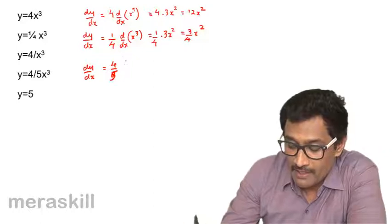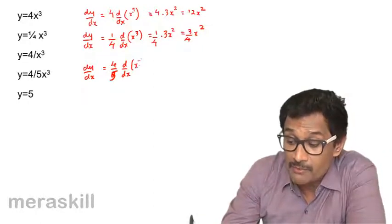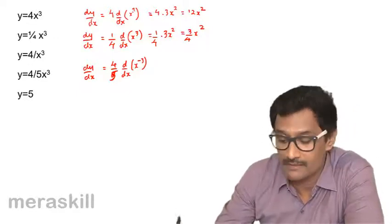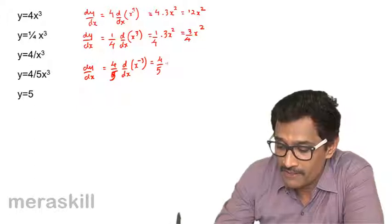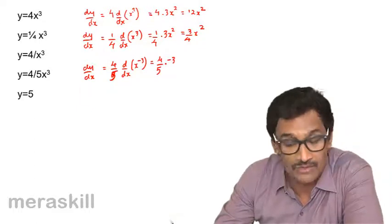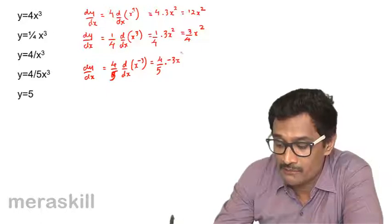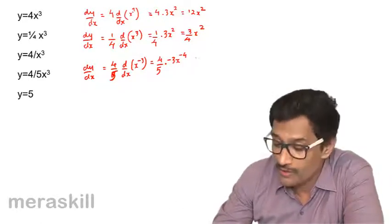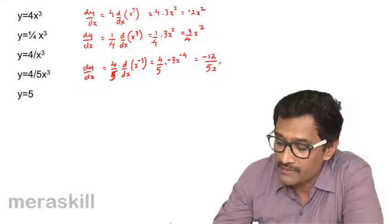Next, dy/dx is (4/5) · d/dx of x^(-3). Because x is in the denominator, this becomes (4/5) · n · x^(n-1) where n = -3, giving (4/5) · (-3) · x^(-4) = -12/5 · x^(-4).